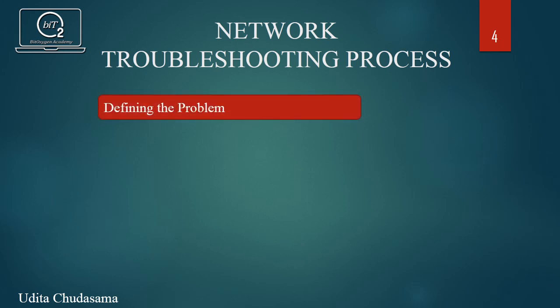The first step in the network troubleshooting process is defining a problem. This step includes describing the problem accurately, as an accurate problem definition leads to an accurate problem solution at the end.